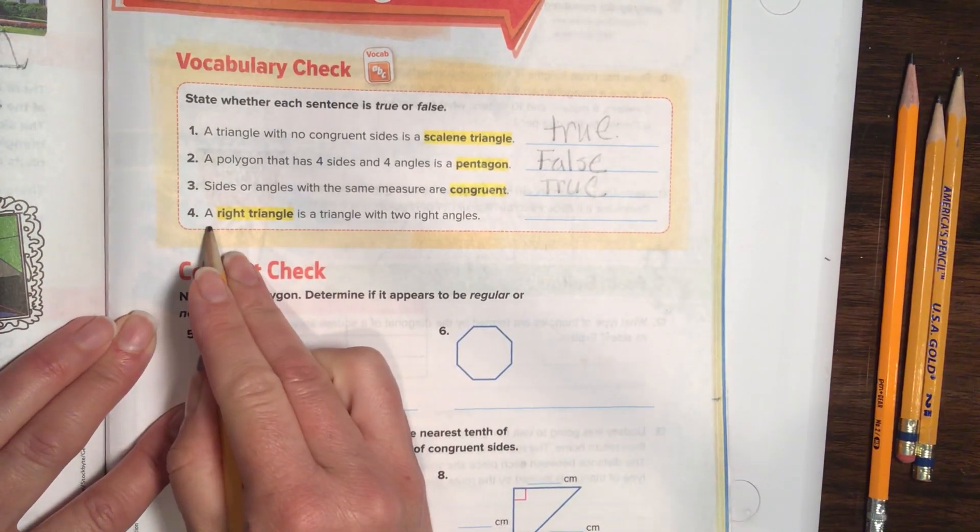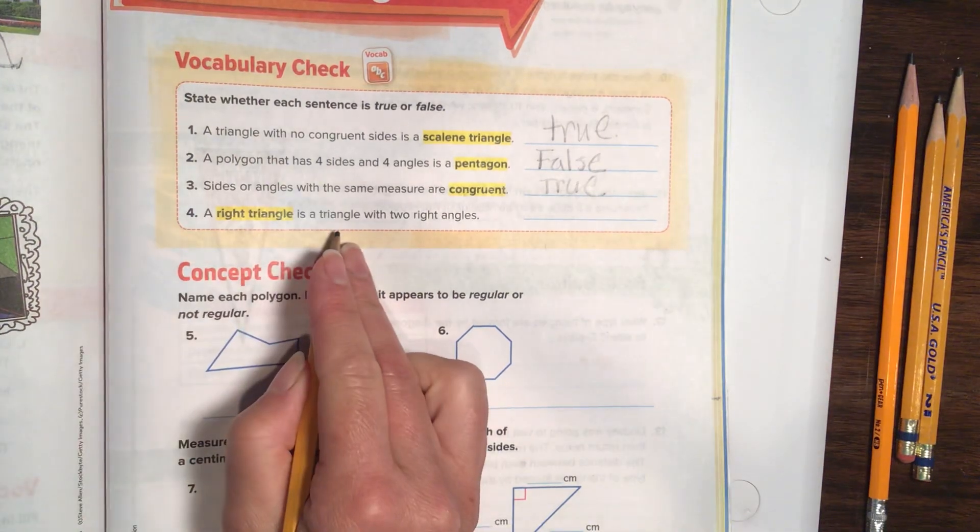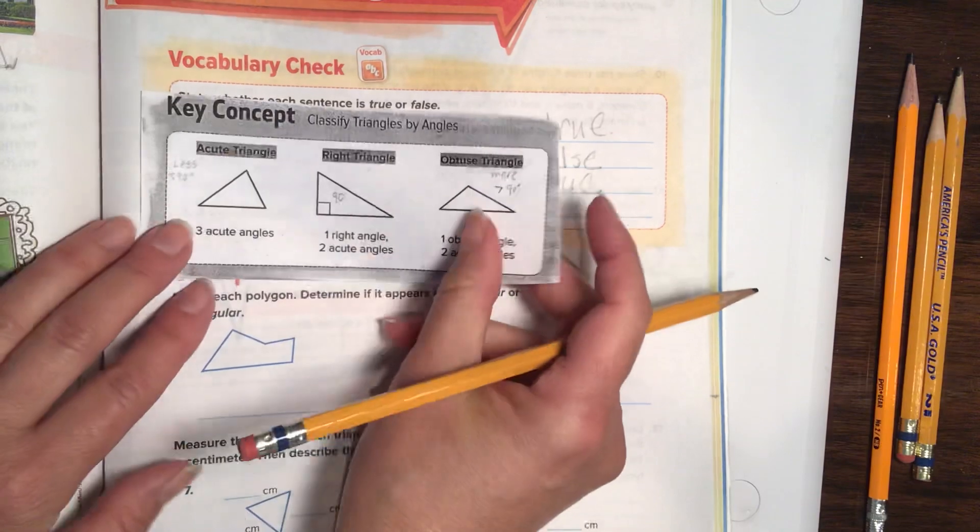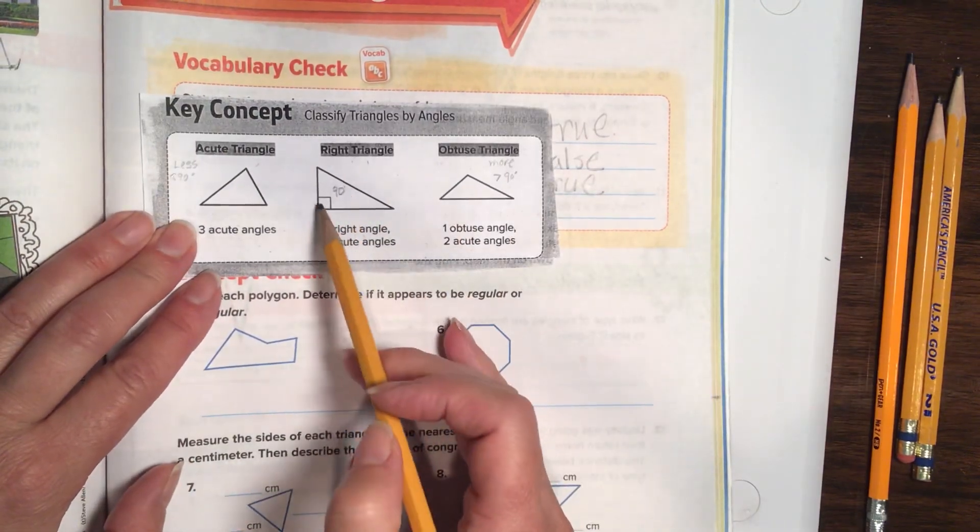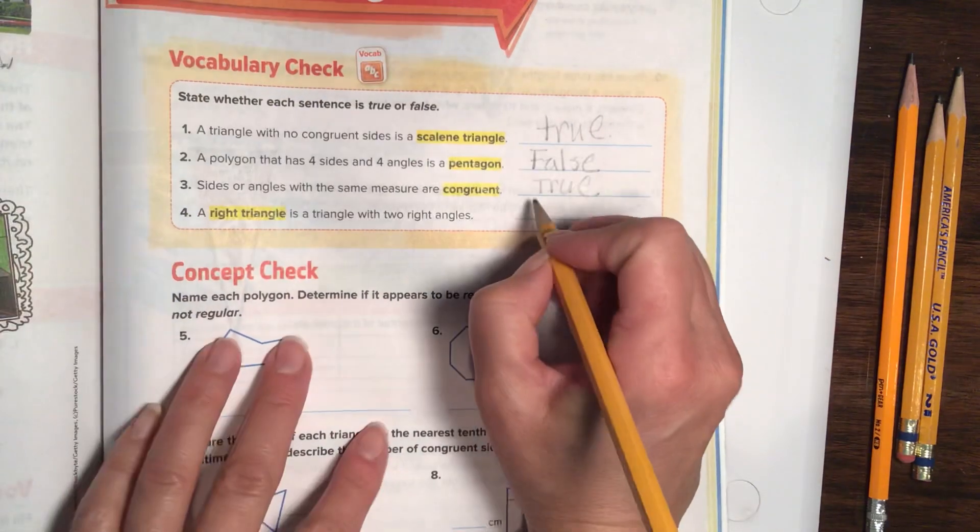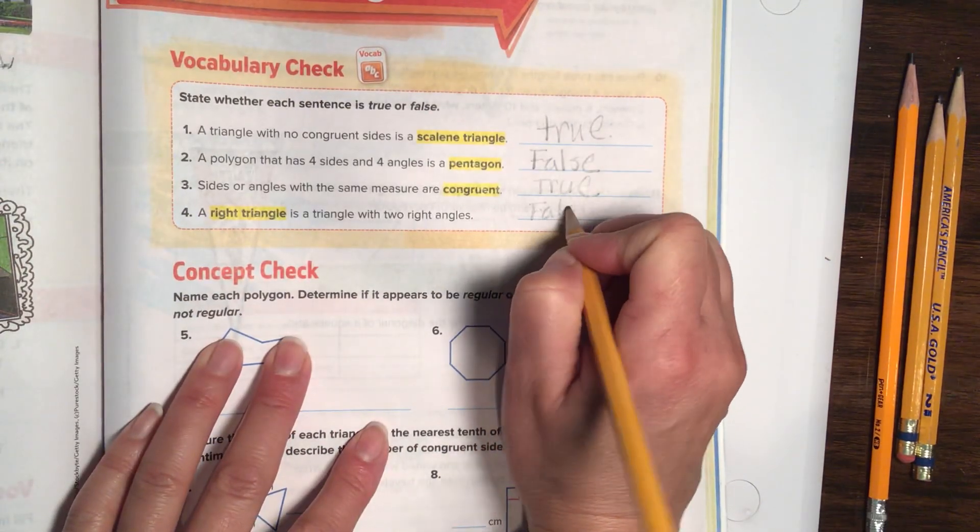And number four. A right triangle is a triangle with two right angles. Well, if I look at a right triangle, there is only one. So that statement is not true. So we are going to put false.